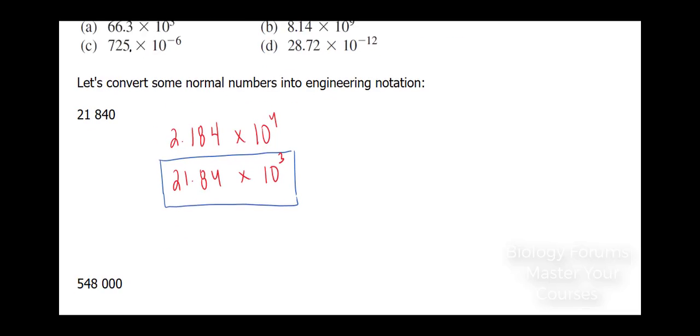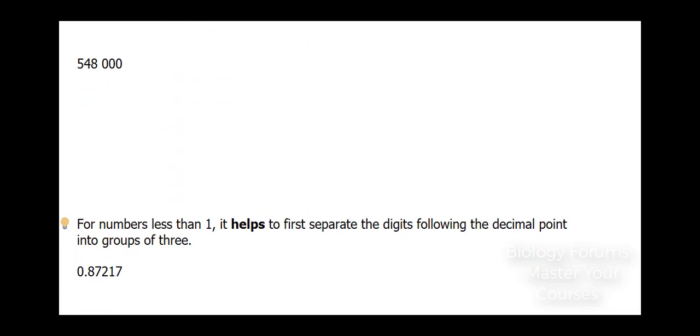Let's try the next one. Here we have 548,000, we must convert it into engineering notation. We can start off by writing it in scientific notation. In scientific notation, it would look like this. And as you can tell, this part of the expression works, but this part doesn't. 5 is not a multiple of 3. So what can we do?